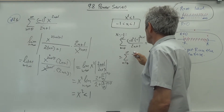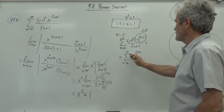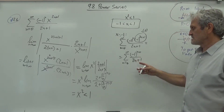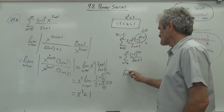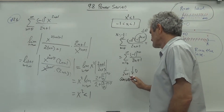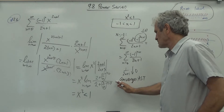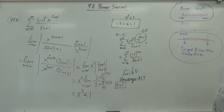This is an alternating series, and 1/(2n+1) monotonically approaches 0. So by the alternating series test, it converges. When x equals 1, we get the sum of (-1)^n over (2n+1), which is again an alternating series with the same monotone decrease to 0 — so it also converges.